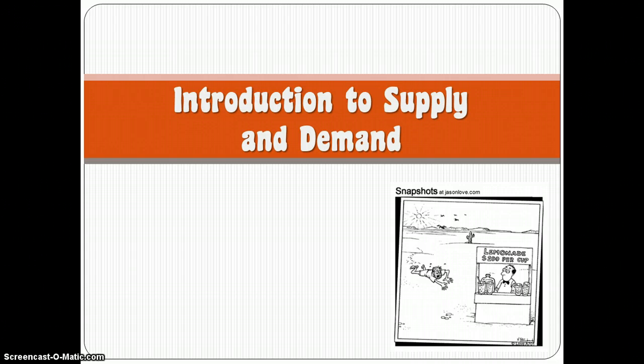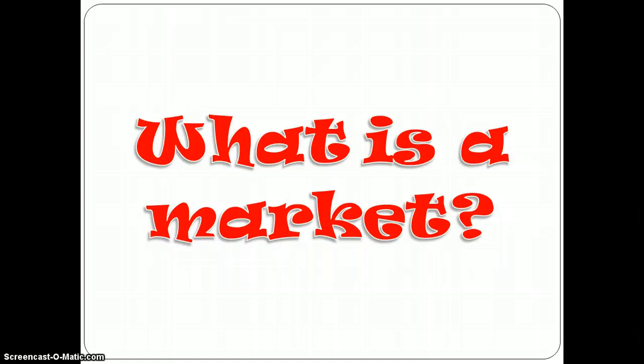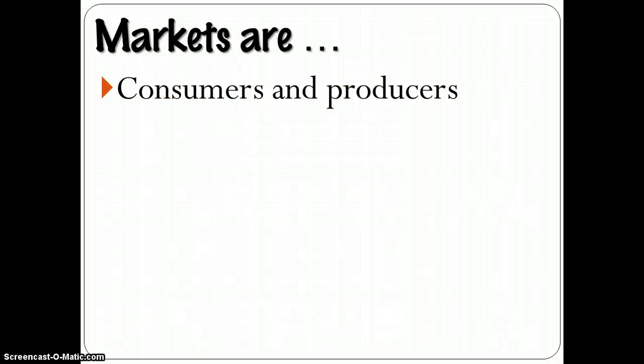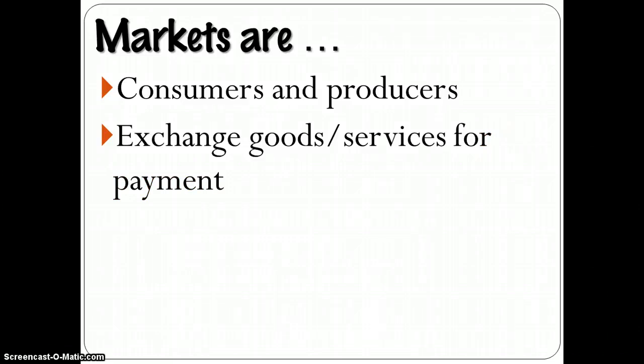But before we get too far into it, we want to talk briefly about what is a market. A market is pretty simple. In a microeconomic world, markets are a combination of consumers and producers who are getting together to exchange goods and services for some form of payment.